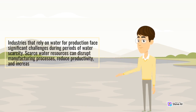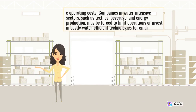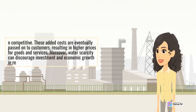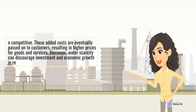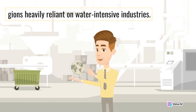Industries that rely on water for production face significant challenges during periods of water scarcity. Scarce water resources can disrupt manufacturing processes, reduce productivity, and increase operating costs. Companies in water-intensive sectors, such as textiles, beverage, and energy production, may be forced to limit operations or invest in costly water-efficient technologies to remain competitive. These added costs are eventually passed on to customers, resulting in higher prices for goods and services. Moreover, water scarcity can discourage investment and economic growth in regions heavily reliant on water-intensive industries.